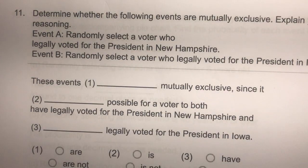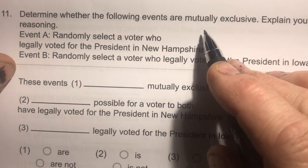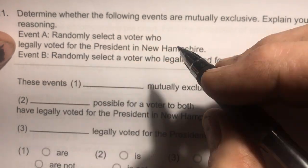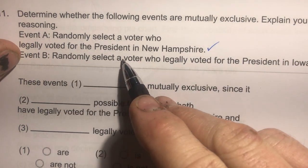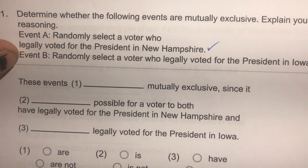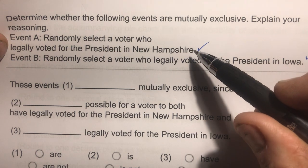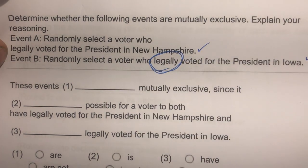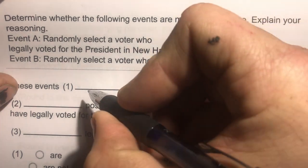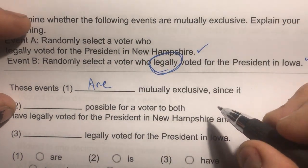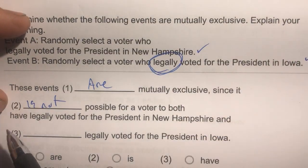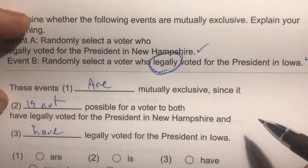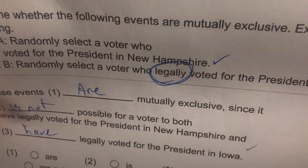Number eleven: randomly selecting a voter who legally voted for president in New Hampshire (Event A) vs. randomly selecting a voter who legally voted for president in Iowa (Event B). You can't legally vote for president in two different states, so these are mutually exclusive — it's not possible for a voter to have legally voted in both New Hampshire and Iowa.